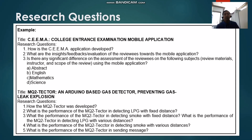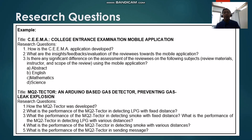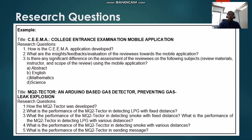Here are examples of research questions. The first example title is CIMA — a College Interim Examination Mobile Application. The research questions are: How was the CIMA application developed? What are the insights, feedback, and evaluations of the reviewers toward the mobile application? Is there any significant difference in the assessment of the reviewers of the following subject materials — instructor and scope of the review using the mobile application, in terms of abstract, English, mathematics, and science?